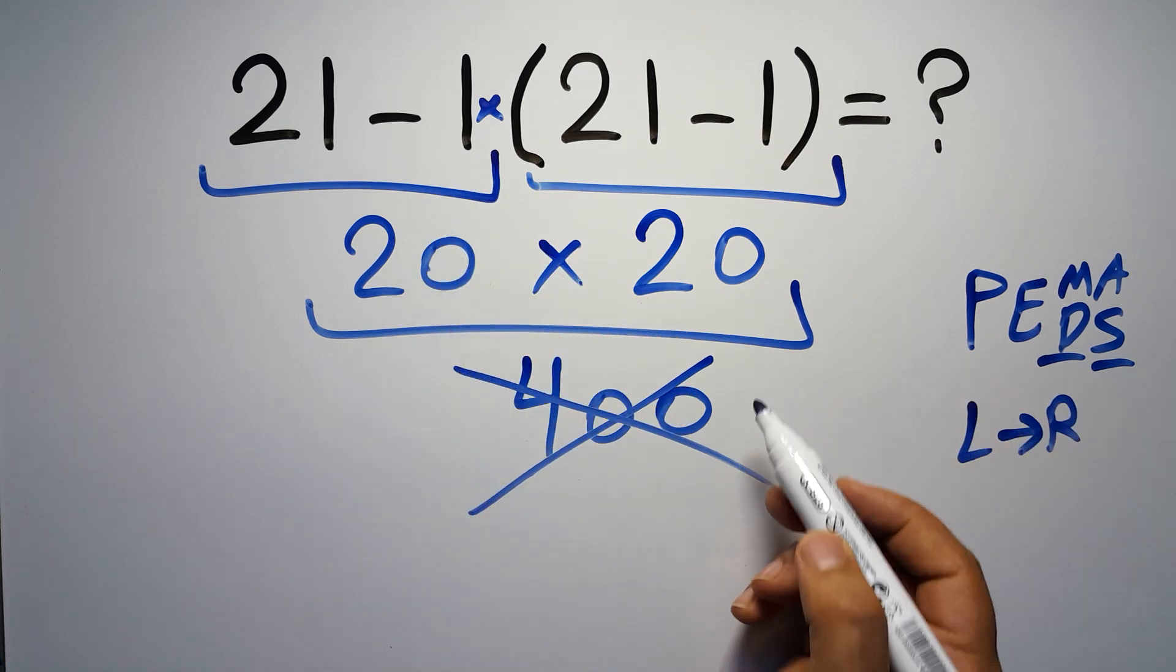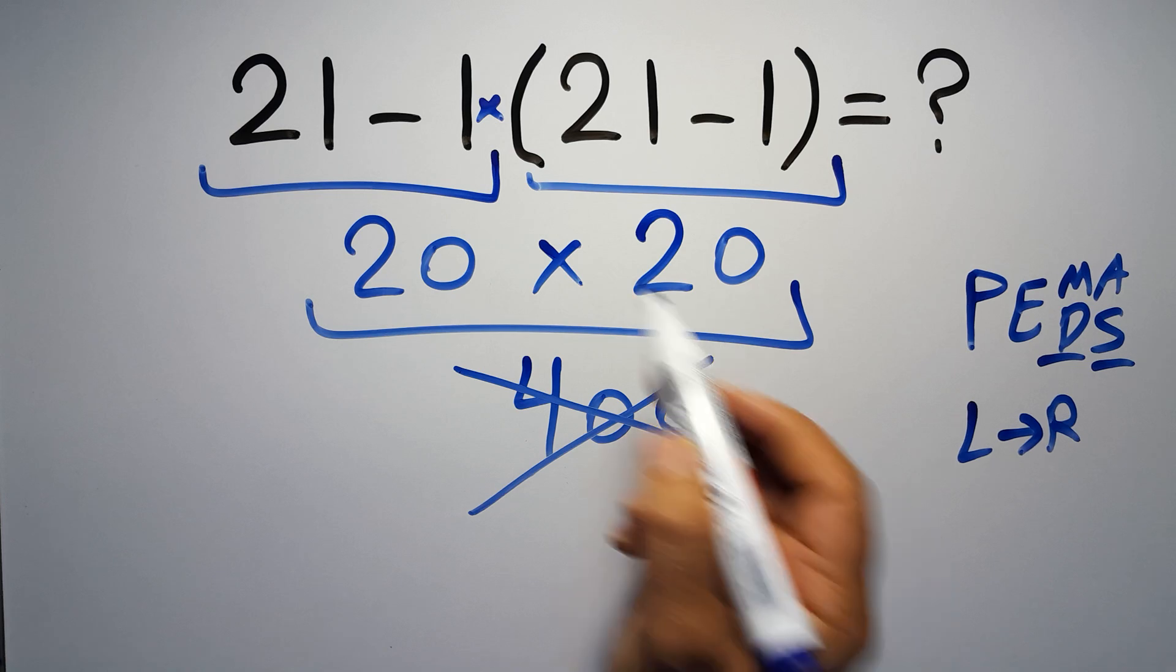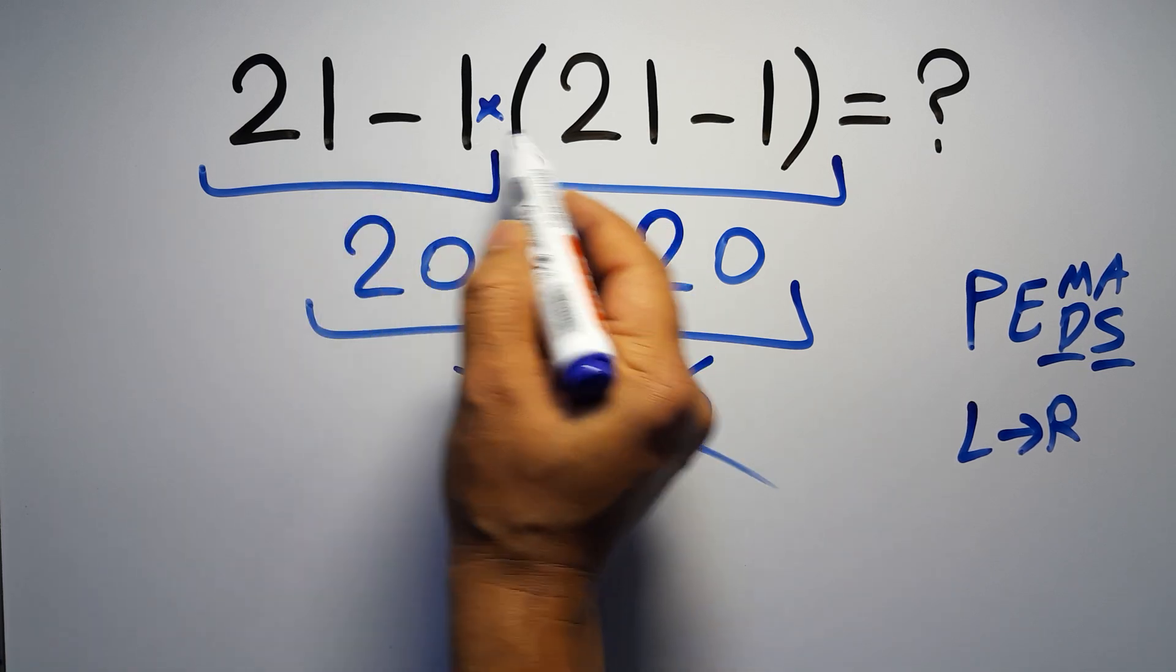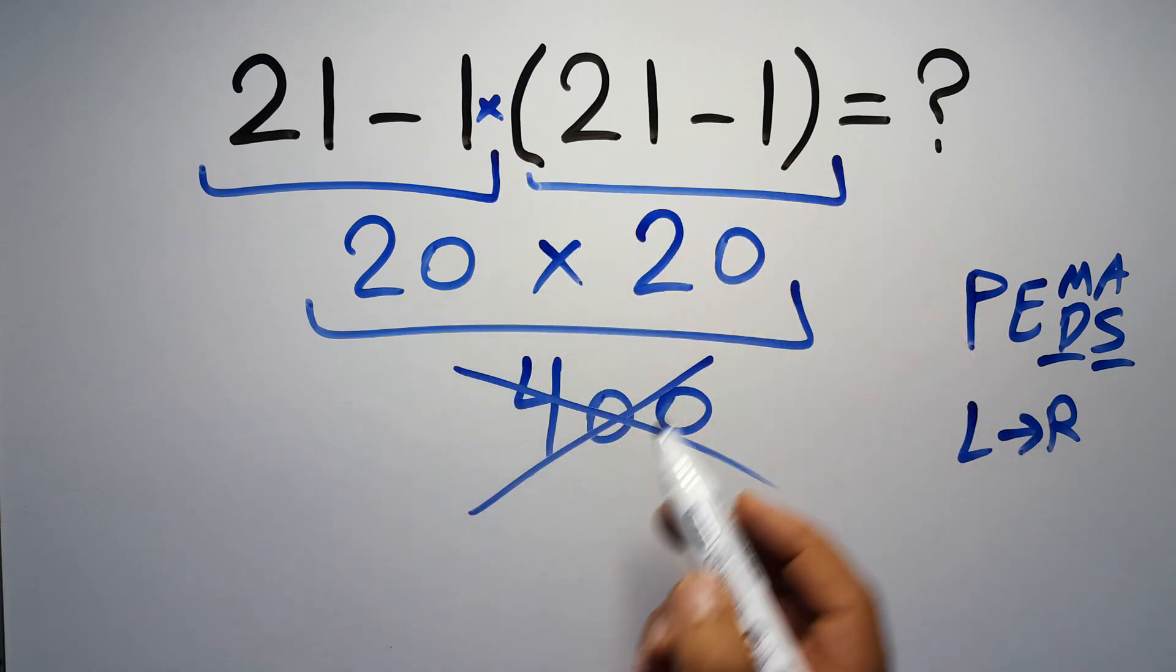So according to the PEMDAS, first we have to do this parentheses, then this multiplication and finally this subtraction. If we do this subtraction before this multiplication or this parentheses it is wrong.